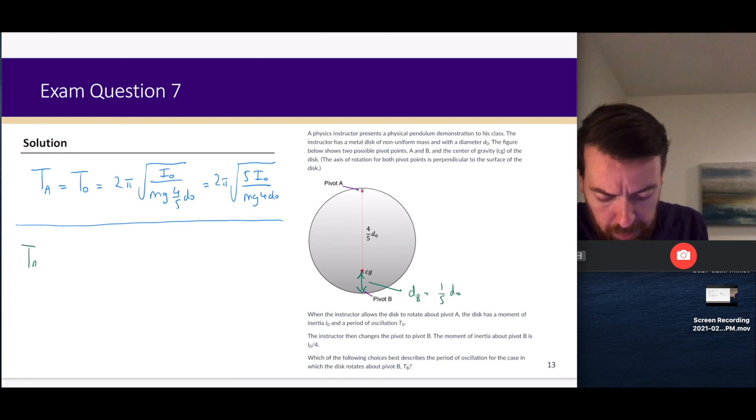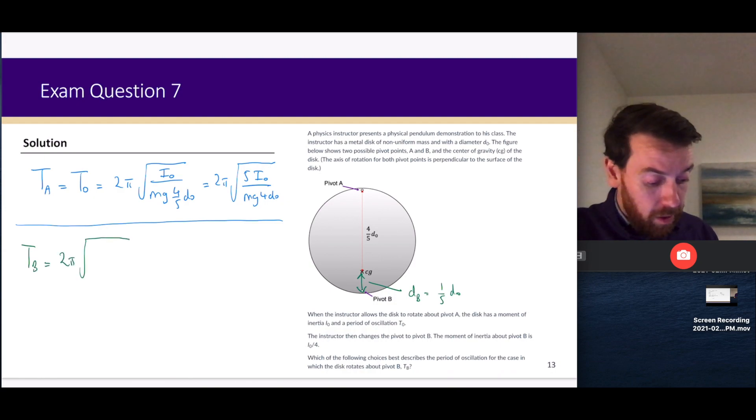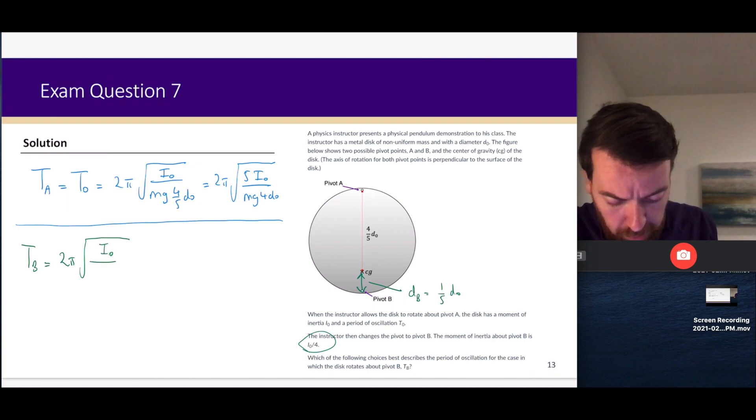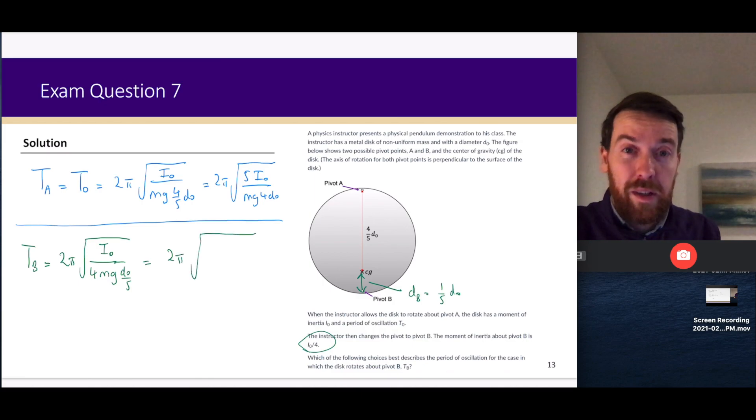T_B will be equal to 2π√(I₀/4)/(mg·d₀/5). I'll put the I₀ and then bring the 4 down. I've got mg and d₀/5, which I can simplify somewhat. Bring that 5 over—the 5 will come up to the top.